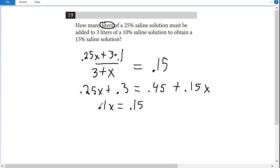And now I want to get rid of my decimal in front of x. So I'll multiply both sides by 10 and I'll just get x equals 1.5. So this is my amount of liters of my 25% saline solution.